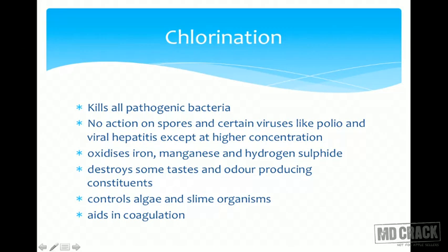Chlorine also oxidizes iron, manganese, and hydrogen sulfide. It destroys some taste- and odor-producing constituents, controls algae and slime organisms, and aids in coagulation. So chlorine has a long list of functions beyond just killing bacteria. One of the most important benefits is residual chlorine — protection against subsequent contamination — which is a fairly unique property. Very few agents have residual protection, and this is why we use chlorine most frequently.